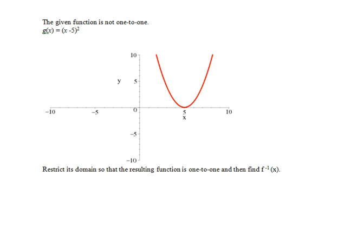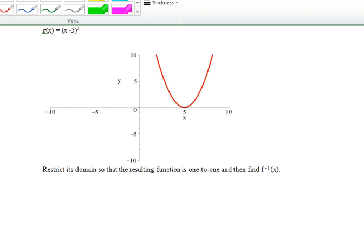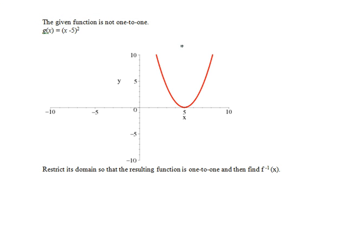To be 1 to 1, a function must either be strictly increasing or strictly decreasing. My plan would be to notice, because of the symmetry of the parabola, that breaking the domain at the vertex of the parabola will accomplish the effect that we would like to.